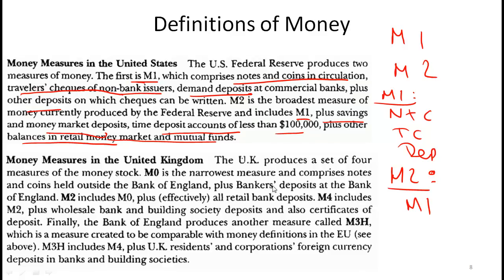Similarly, a credit card with a 50,000 rupee limit is also not money. In the UK, there are four definitions of money. M0 is the narrowest: notes and coins held outside the Bank of England plus bankers' deposits at the Bank of England — it doesn't even include regular consumer deposits. UK's M2 includes M1 plus all retail bank deposits, which actually sounds a lot like America's M1. So M1 and M2 mean different things across countries.